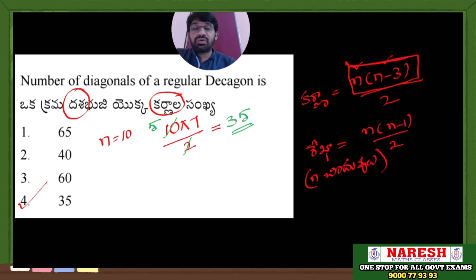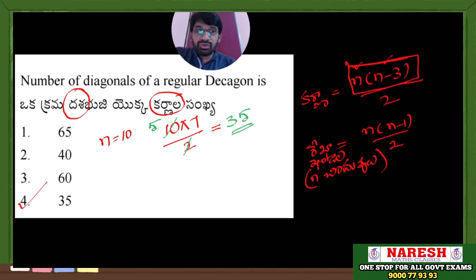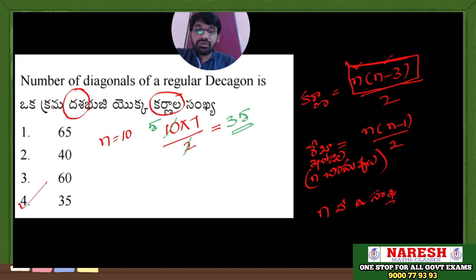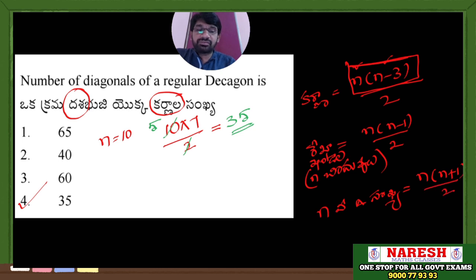Sarekiyalu kani (without diagonals), yn binduvulakunda (from N points), giyegalige Reka kandal sankya (number of line segments that can be drawn) — the formula is N into (N minus 1) divided by 2. Reka kandal sankya: N(N-1)/2.